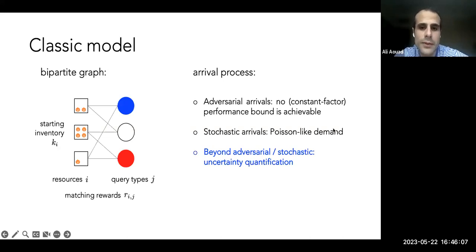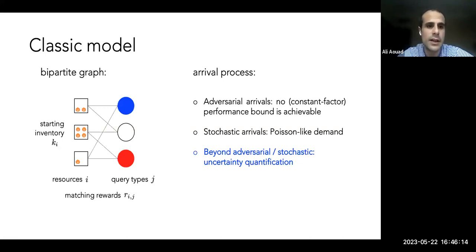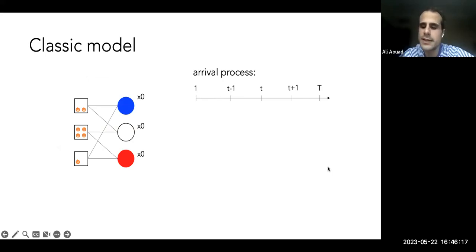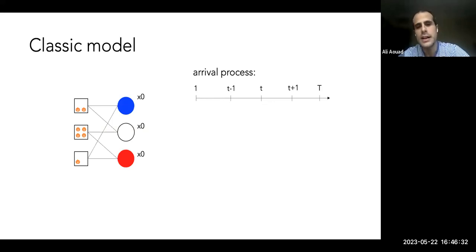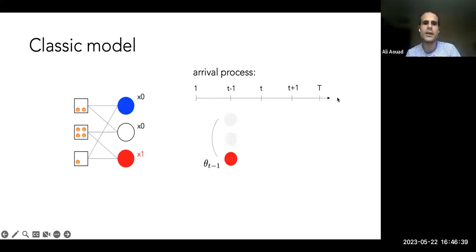Our framework will allow going beyond the adversarial/stochastic separation and quantify uncertainty. What types of models do we encounter? A natural model has an arrival process: in each of T periods, there's a toss of a coin indicating which type of consumer arrives — blue, white, or red types, for example. At time T−1 maybe a red consumer comes in; at T a blue consumer; and so on. The multinomial distribution theta represents arrival probabilities for different types.